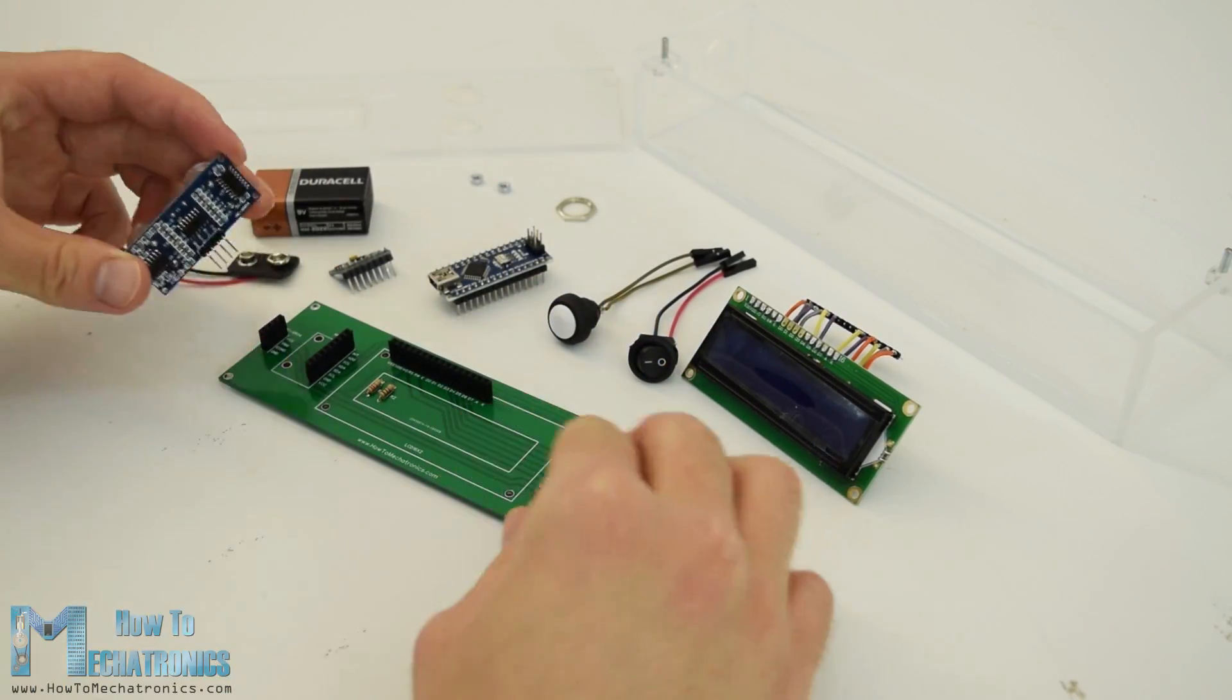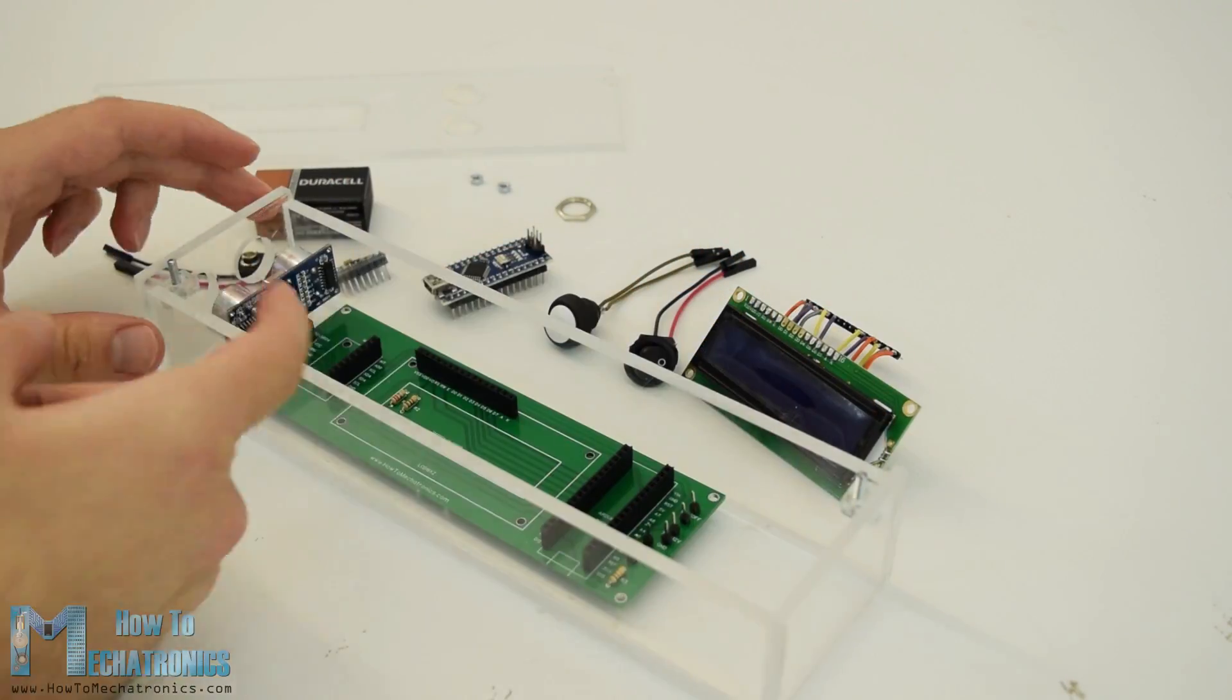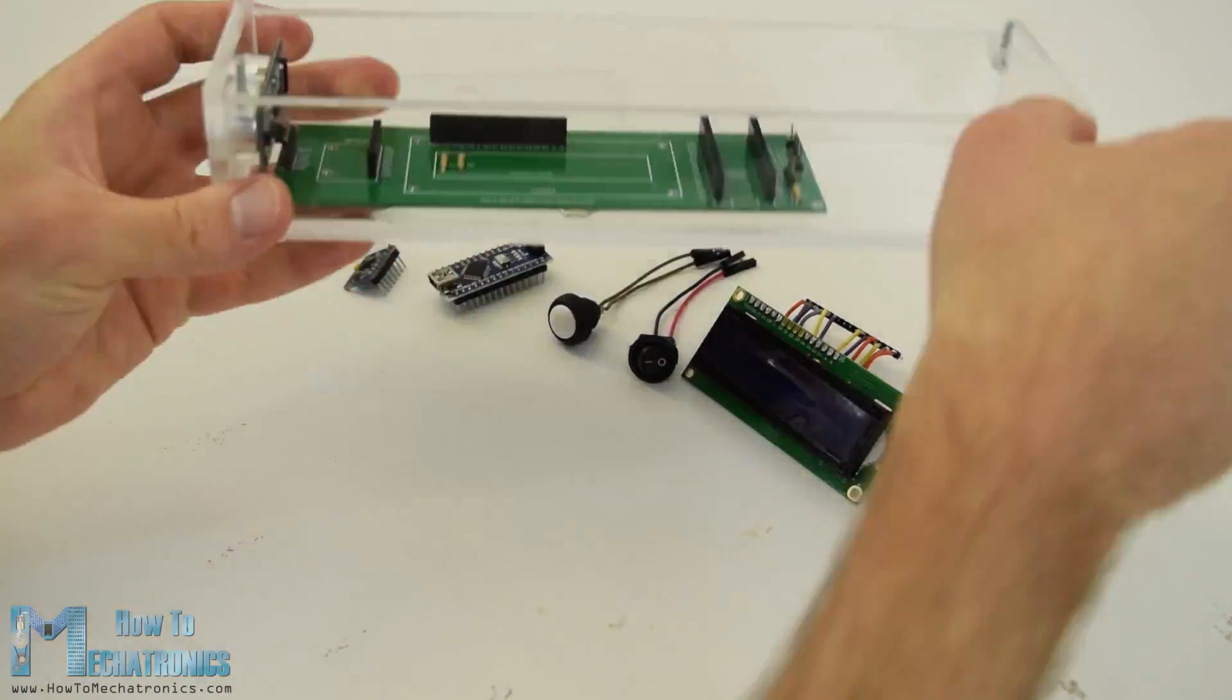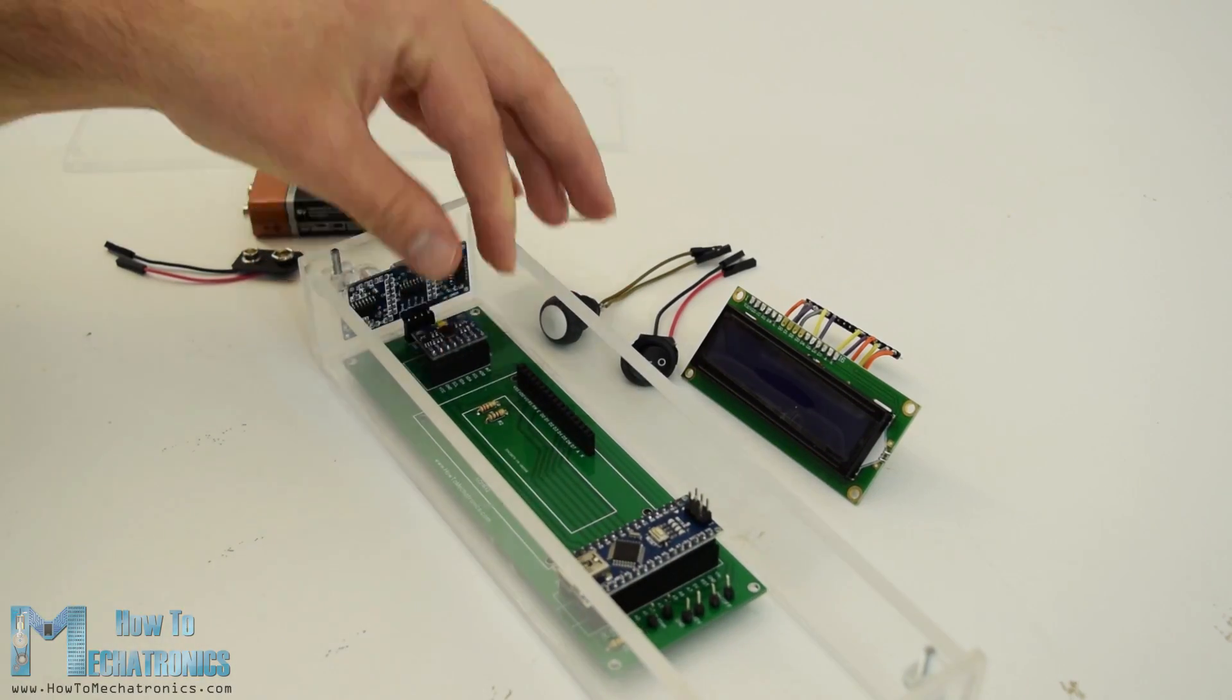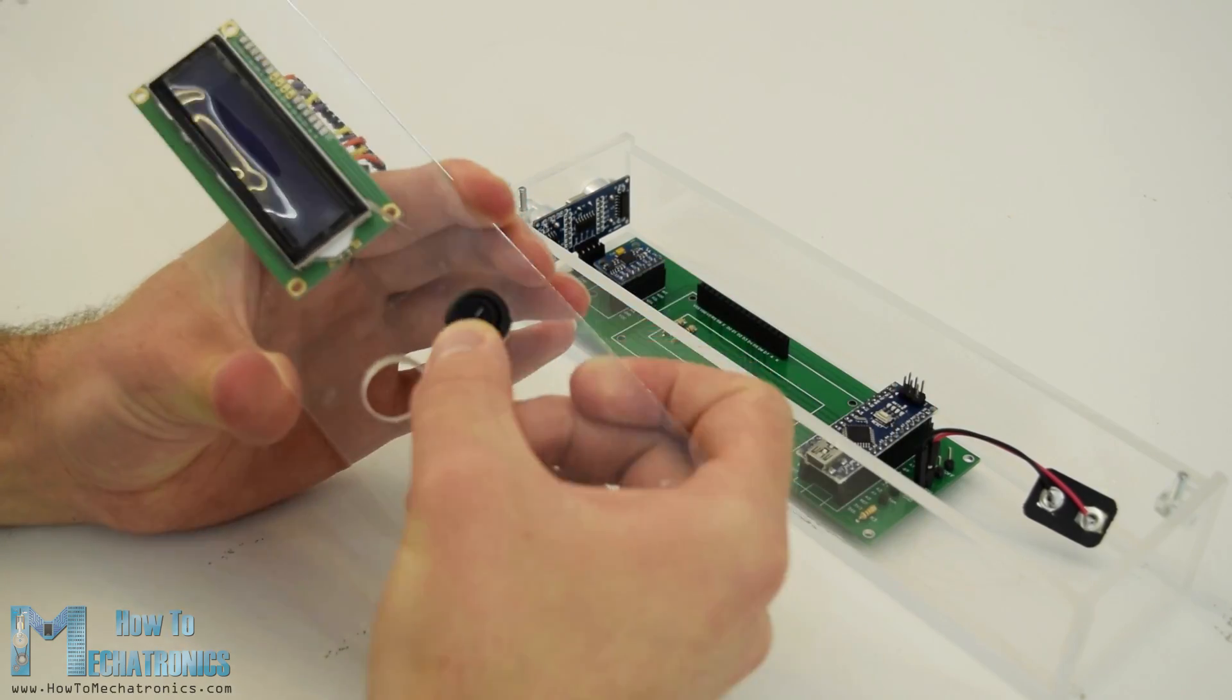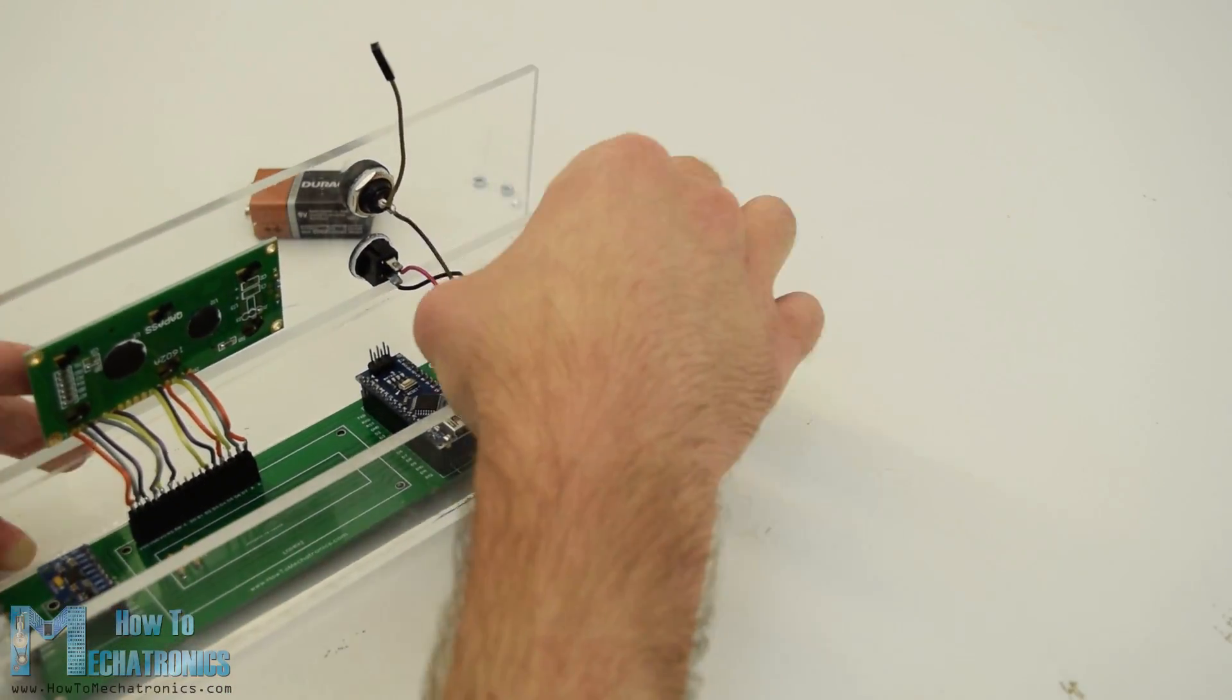Finally I had everything ready to assemble the device. I started with inserting the ultrasonic sensor on the PCB and then through the holes on the side panel. Next was the Arduino board, the accelerometer module as well as the battery connector. On the top panel I secured the LCD, the power switch and the button and then connected them to the PCB.